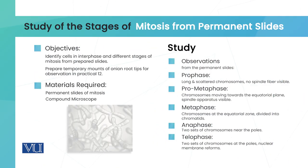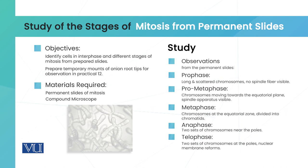Now we have visualized and discussed the different stages of mitosis and also discussed about the interphase. Your teacher will provide you with the permanent slide and the compound microscope. Your task is to identify the different stages of mitosis that occur in the onion root tip by visualizing it under the microscope.